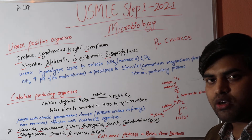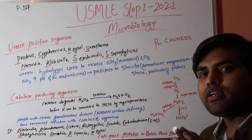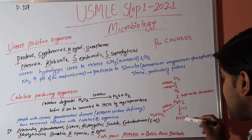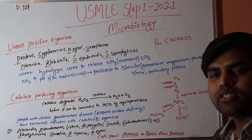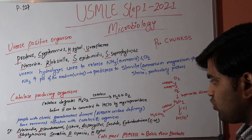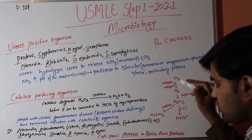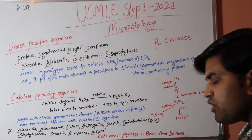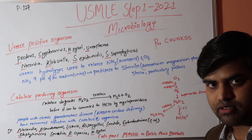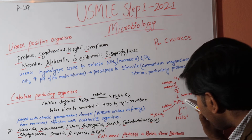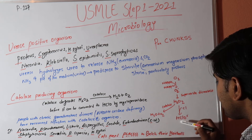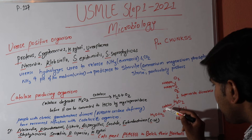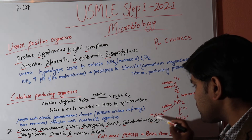Catalase-negative bacteria are killed effectively because the macrophage uses their free radicals to produce hydrogen peroxide and hypochlorite. However, catalase-positive organisms possess the catalase enzyme, which breaks down hydrogen peroxide into H2O and O2 before it can be converted into hypochlorite. Therefore, hypochlorite is never formed against catalase-positive organisms.